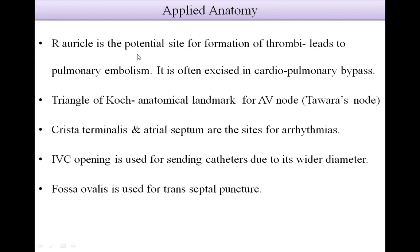Applied anatomy of the right atrium: The right auricle is a potential site for formation of thrombi, which leads to pulmonary embolism. It is often cannulated in cardiopulmonary bypass. The triangle of Koch is an anatomical landmark for the AV node. The crista terminalis and atrial septum are sites for arrhythmias. The inferior vena cava opening is used for sending catheters due to its wider diameter. The fossa ovalis is used for transseptal puncture.